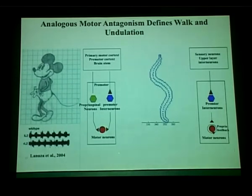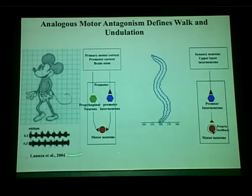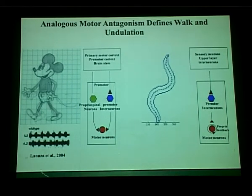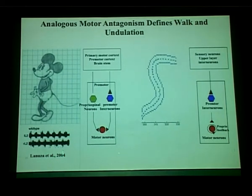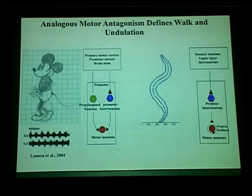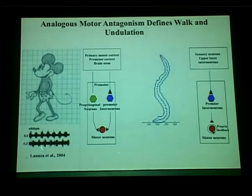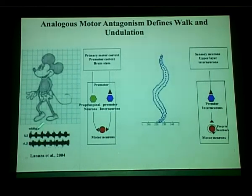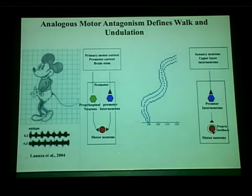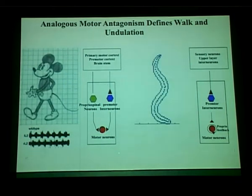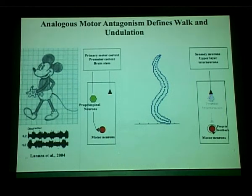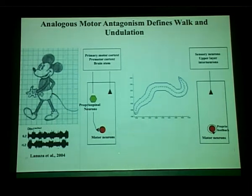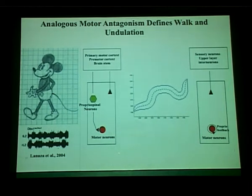This motor antagonism represents a similar underlying mechanism for both walking and undulation. Previous work from Tom Jessell's group and others showed that pre-motor interneuron input in mice is required for generating the alternating firing pattern driving left and right hindlimb muscle contractions. When those pre-motor interneurons are removed, you generate synchronized spontaneous activity of motor neuron output, producing hopping mice instead of walking mice — not so different from C. elegans kinkers activating two directions simultaneously.